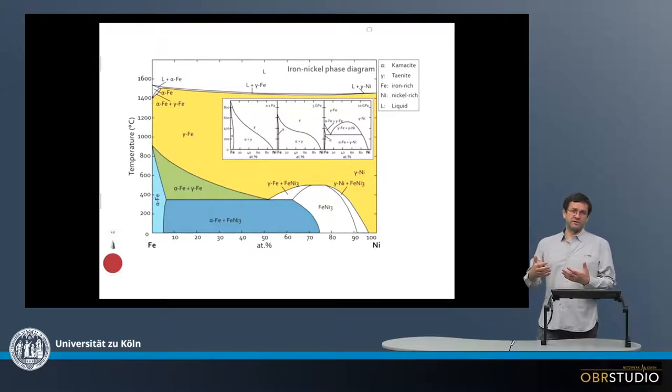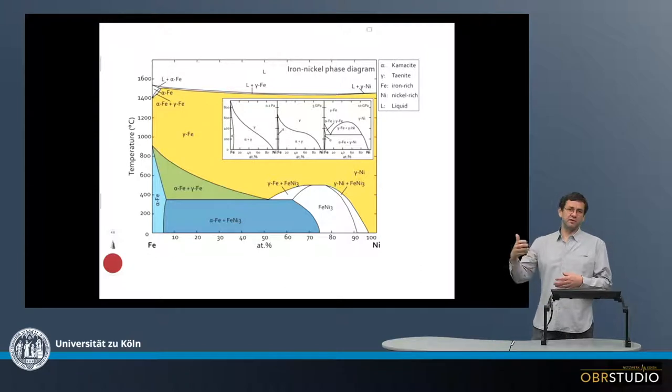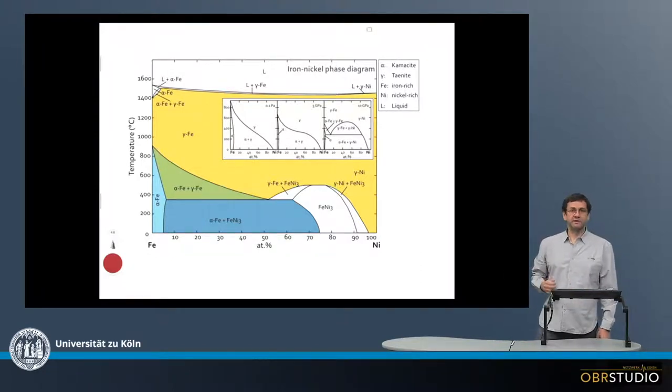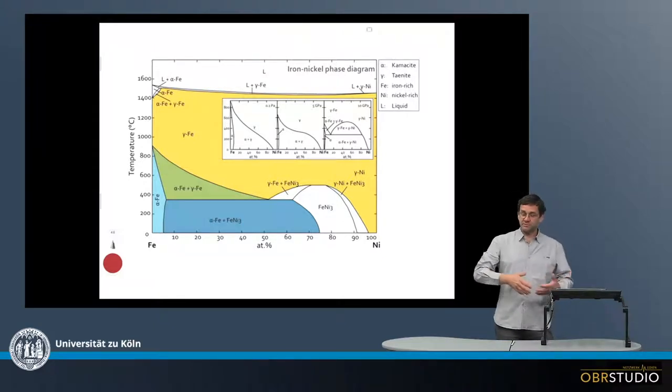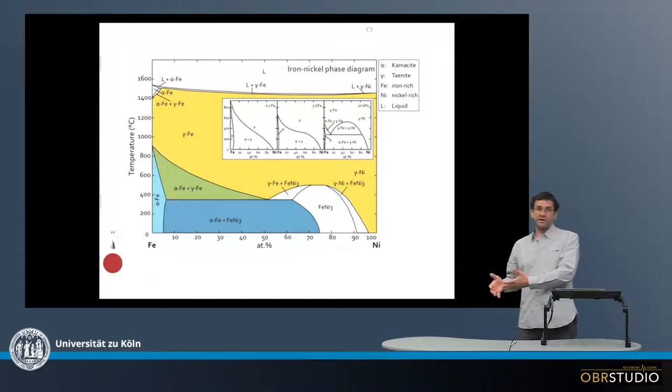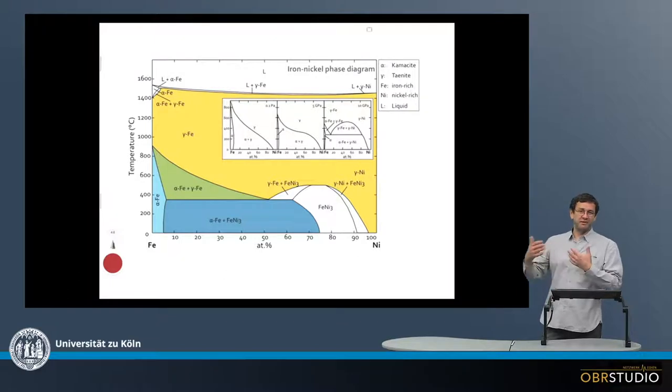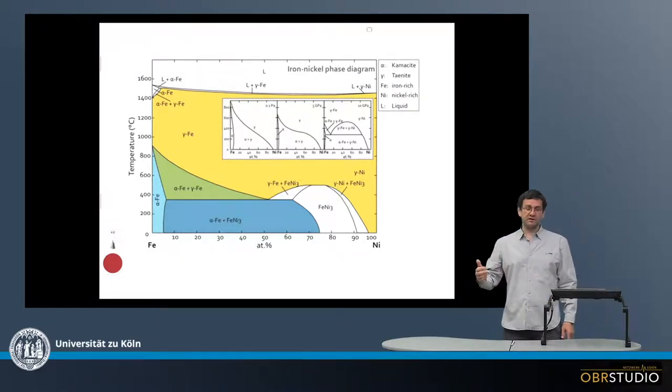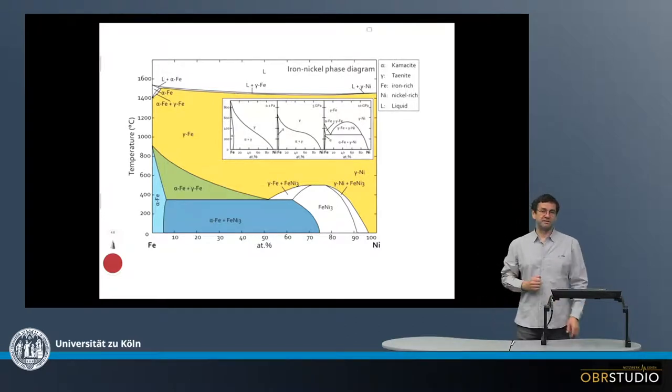Iron in first approximation has an abundance a little more than an order of magnitude higher than nickel. This is the reason why metal in primitive chondrites and the cores of asteroids has a composition of about 90 plus, 93 to 94 weight percent iron, and the rest is nickel. Of course there's also some minor siderophile elements.